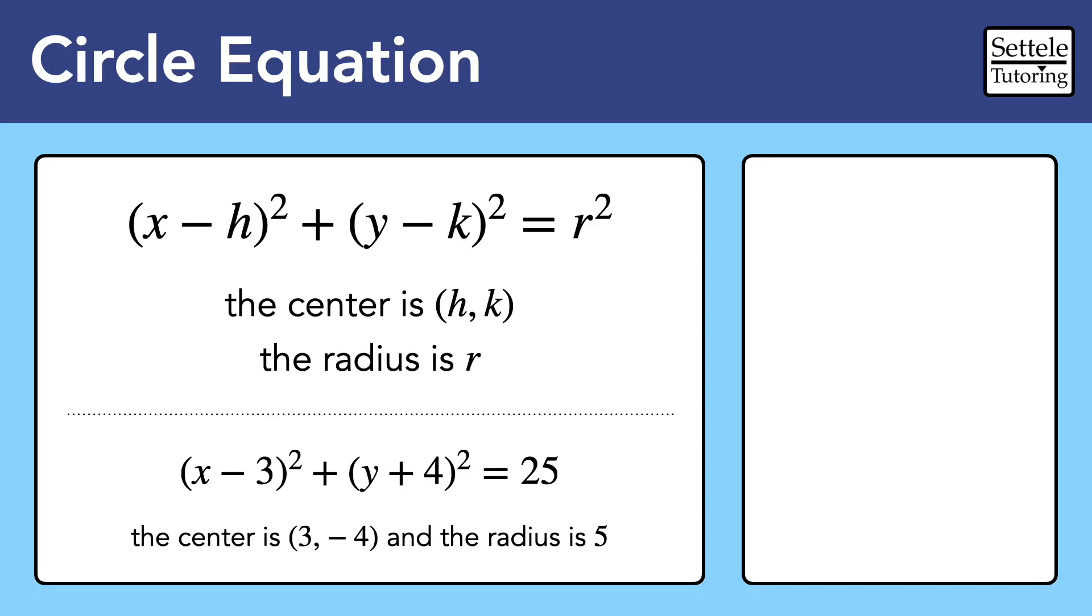The circle equation is worth memorizing because most SAT questions that involve circles in the xy plane are really just about reading the correct information out of the formula. As you can see, the formula (x-h)² + (y-k)² = r² tells us that the center is the point (h,k) and the radius is r.